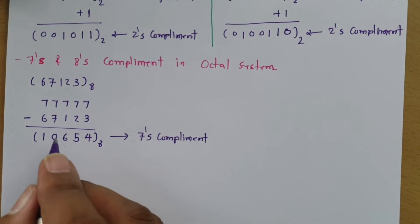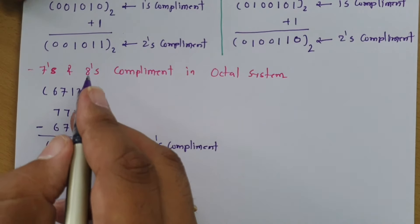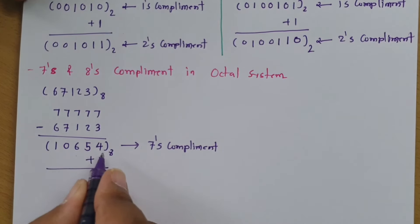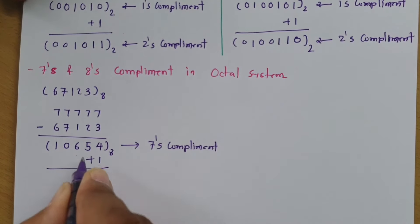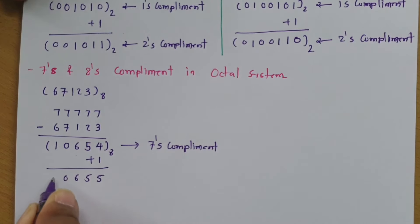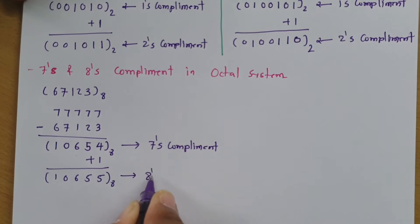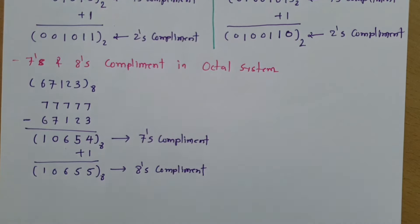This is the 7's complement. Now, adding 1 to this 7's complement gives the 8's complement. So 4 plus 1 is 5, then 5, 6, 0, 1. That is how we convert a given octal number into 7's and 8's complement.